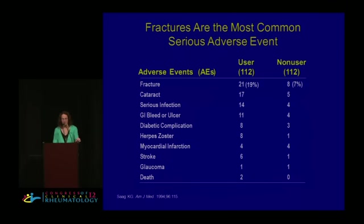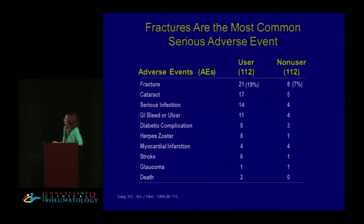As mentioned yesterday, prednisone is poison — and it poisons many, many organs. This is a list of adverse events related to patients on glucocorticoids that Ken Saag put together years ago. You'll find fracture obvious, along with cataracts, infections, GI bleeds and ulcers, atherosclerosis, and glaucoma — and we've probably all seen some aspects of this in our practices.